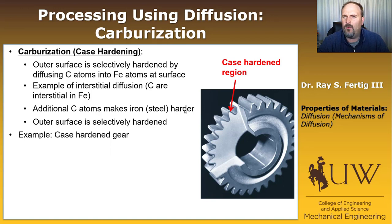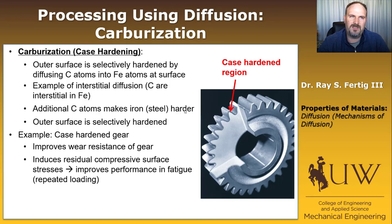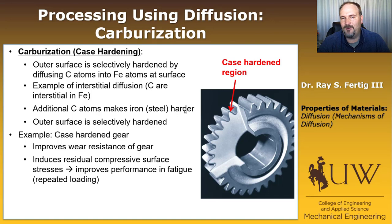Consider a gear as an example: hardening the outside of the material improves wear resistance and induces residual compressive surface stresses, which minimizes fatigue wear. You might ask why not make the whole gear from hard steel — the problem is you want to machine the part easily first. Case hardening lets you create the part from a softer, more machinable material and then selectively harden just the surfaces that will experience the most wear.